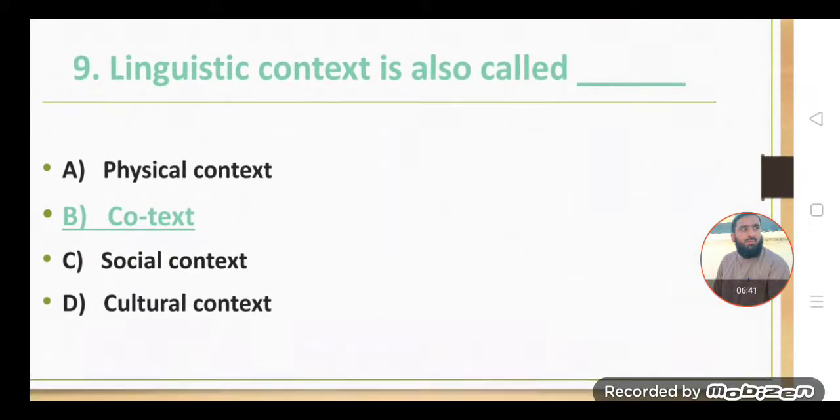Linguistic context is also called physical context? No. Cotext, yes. Linguistic context is also called cotext. Option B is the correct option. Social context, cultural context, these are the types of contexts. But linguistic context means cotext.